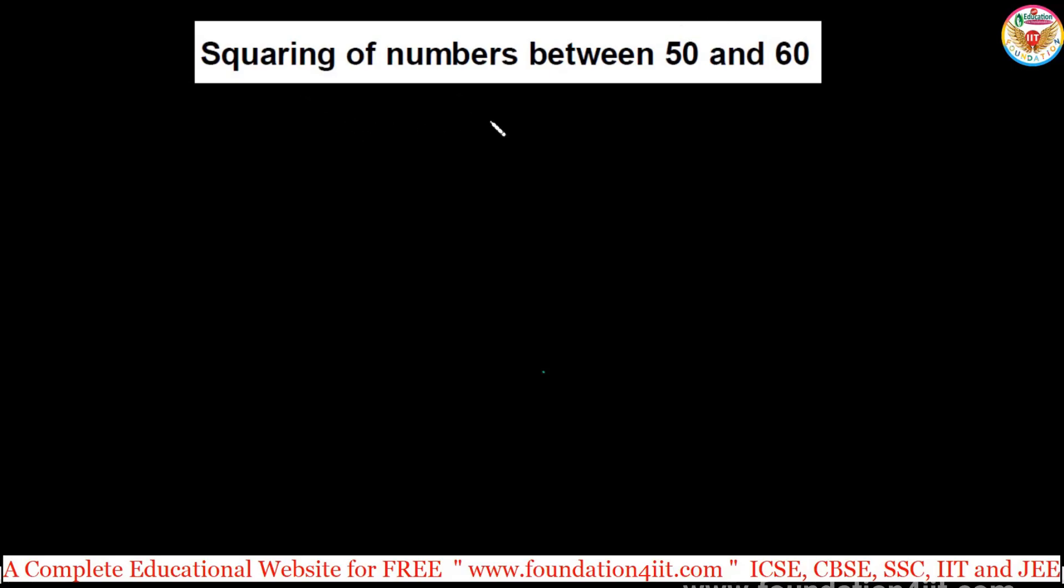Squaring of numbers between 50 and 60. Let us continue this topic. In the previous one, we have seen squares ending with 5. Now, this is a particular specific technique only for between 50 and 60 - how to find the squares very fast.